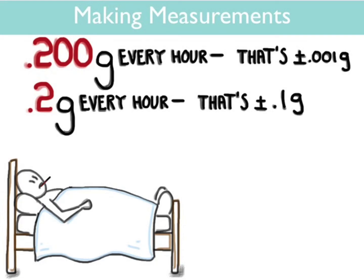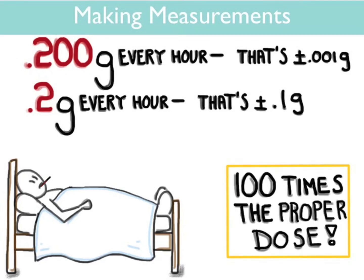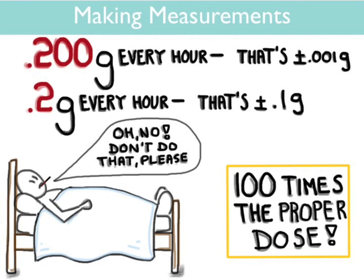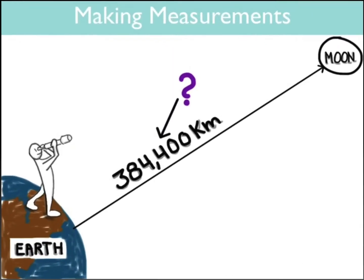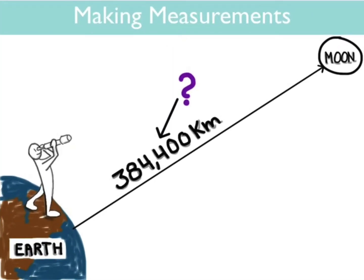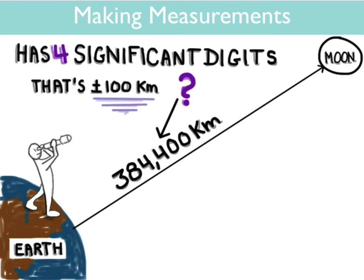Now consider an astronomer who measures the distance to the moon as 384,400 kilometers. Where's the uncertainty in this number? Do the zeros count? Well, the answer is no. As written, the scientist has guessed at the four in the hundreds place, so the measurement is only reliable plus or minus a hundred kilometers. It is only four significant digits, which doesn't seem very good.